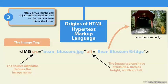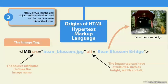HTML allows images and objects to be embedded and can be used to create interactive forms as well. Here's an example of the image tag — it's simply the letters IMG inside the angle brackets. You have to tell it a few things, and one of the main ones is an attribute called source. So src is the source attribute, and that's telling the browser which photo you want to use and in some cases where that photo is located. Here, source equals, in quotations, beanblossom.jpg — that's the actual name of my photo.